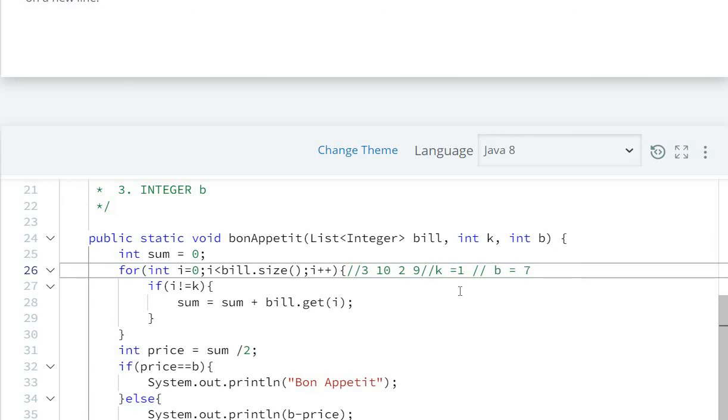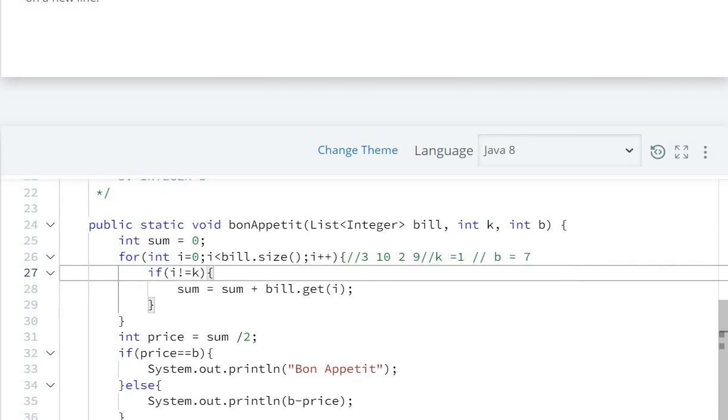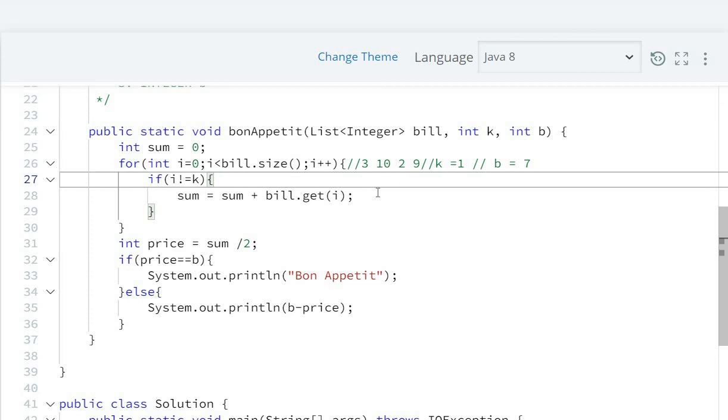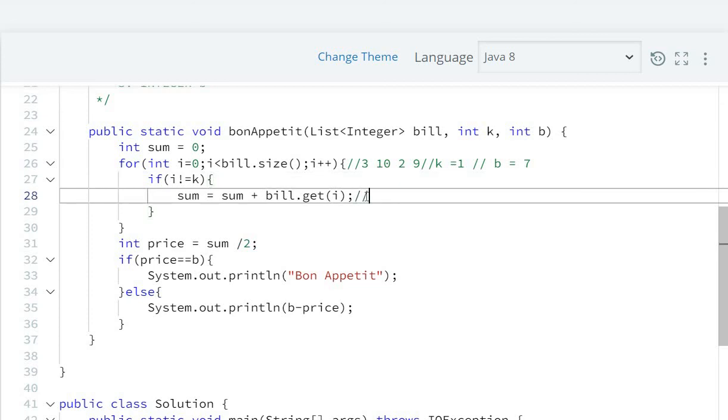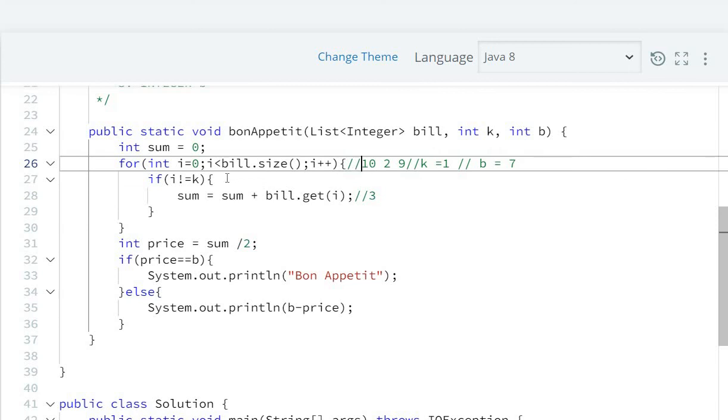So at index 0, sum will add to become 3. Next we go to index 1, but we should not include this because k value is 1, that is this price we have not to include. Then next is 2, sum will add to become 5.